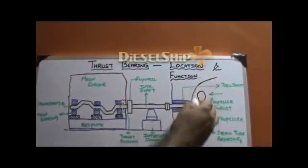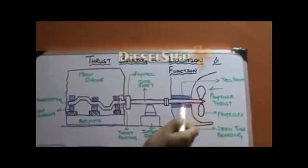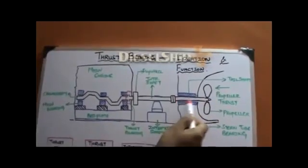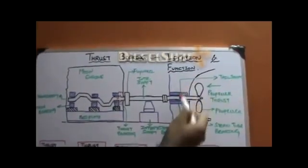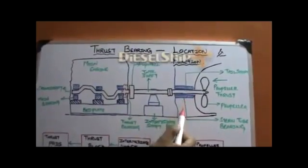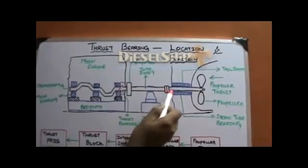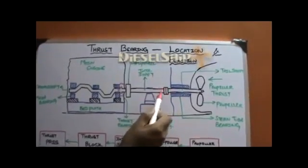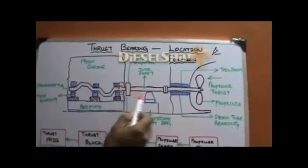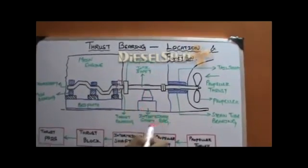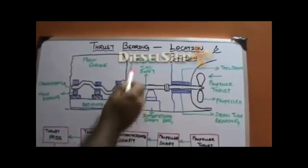Let us assume this to be the aft portion of the ship. We have the propeller here, and the propeller shaft or tail shaft comes inside the ship through the stern tube bearings. The blue shaded portion represents the stern tube bearings which support the propeller shaft. Here is the connection between the propeller shaft and the intermediate shaft via a flange, and the intermediate shaft is supported by the intermediate shaft bearing.